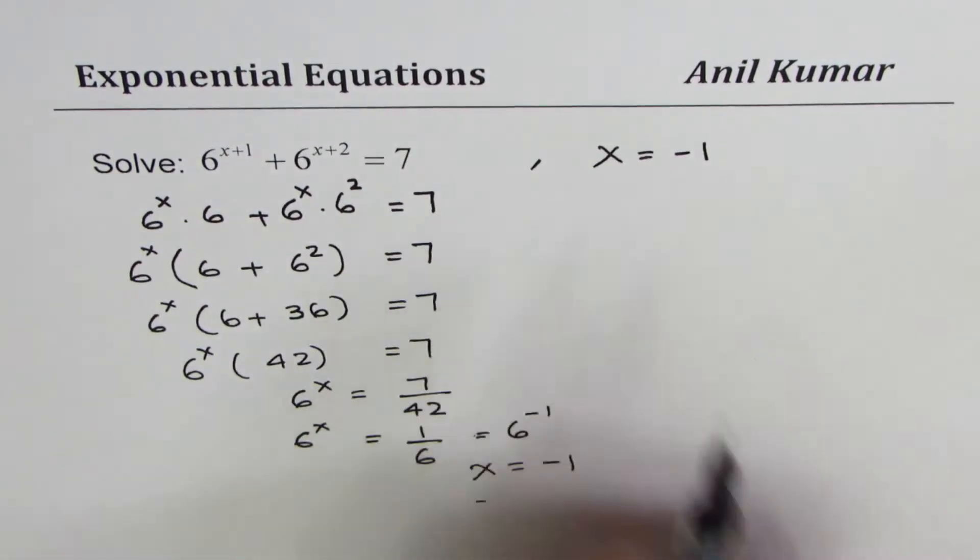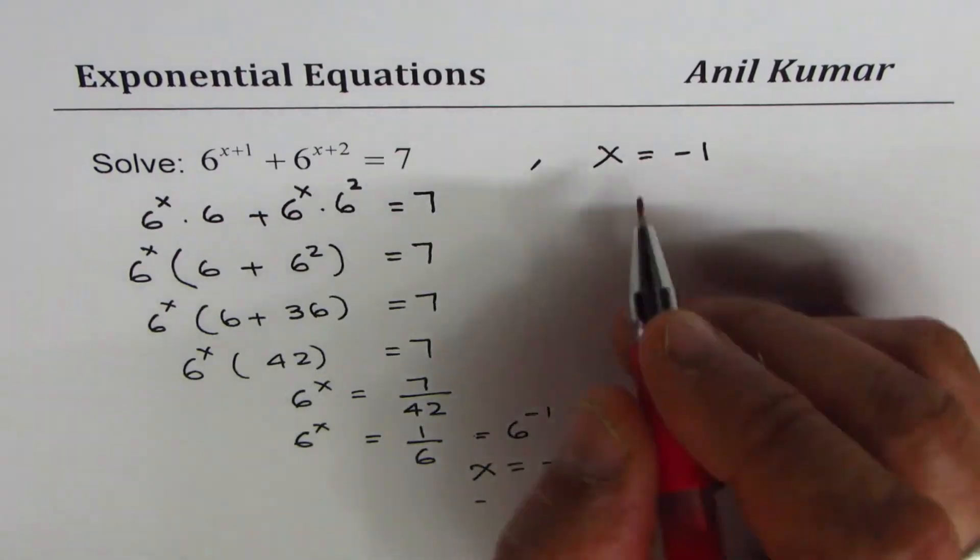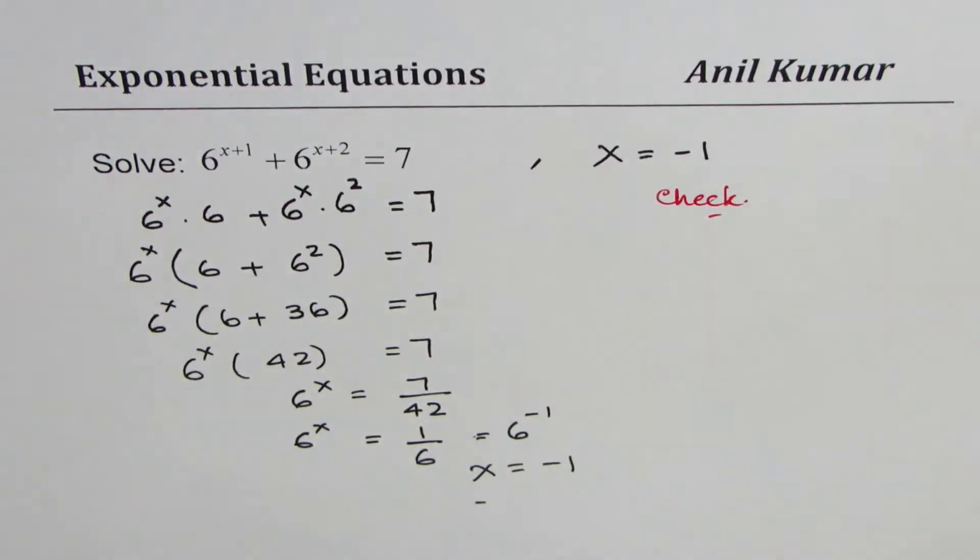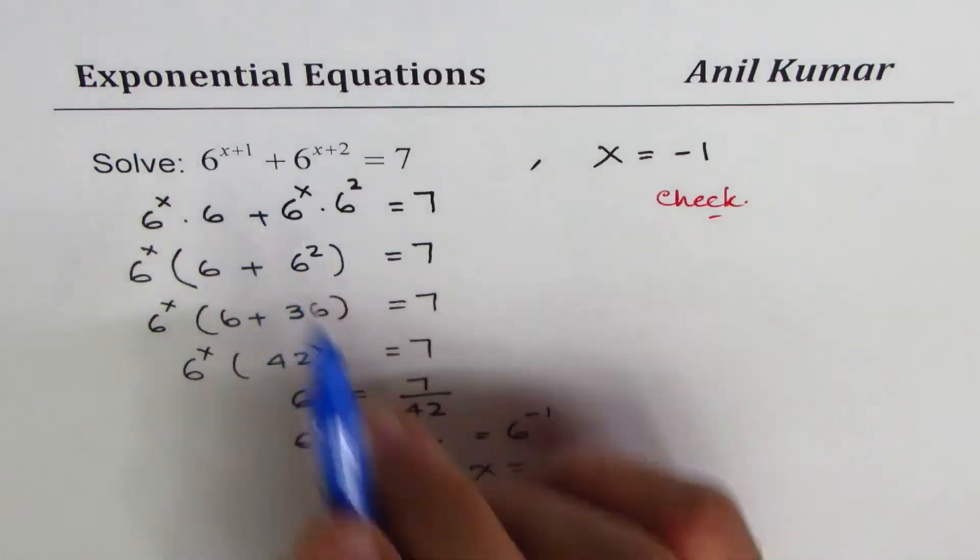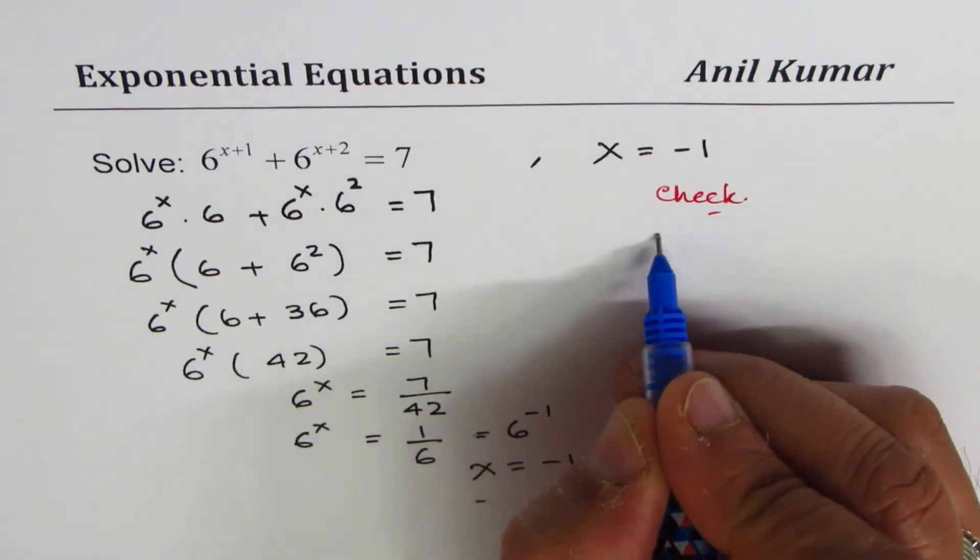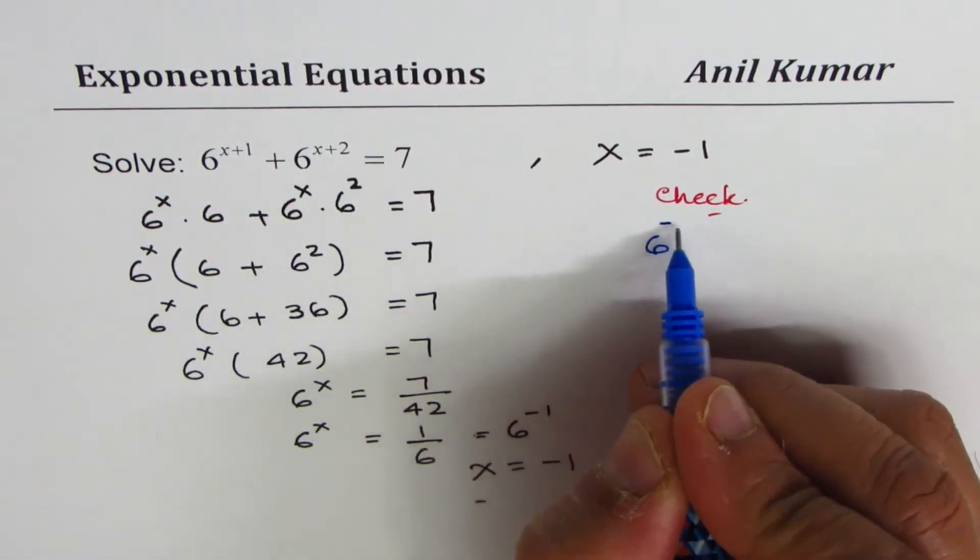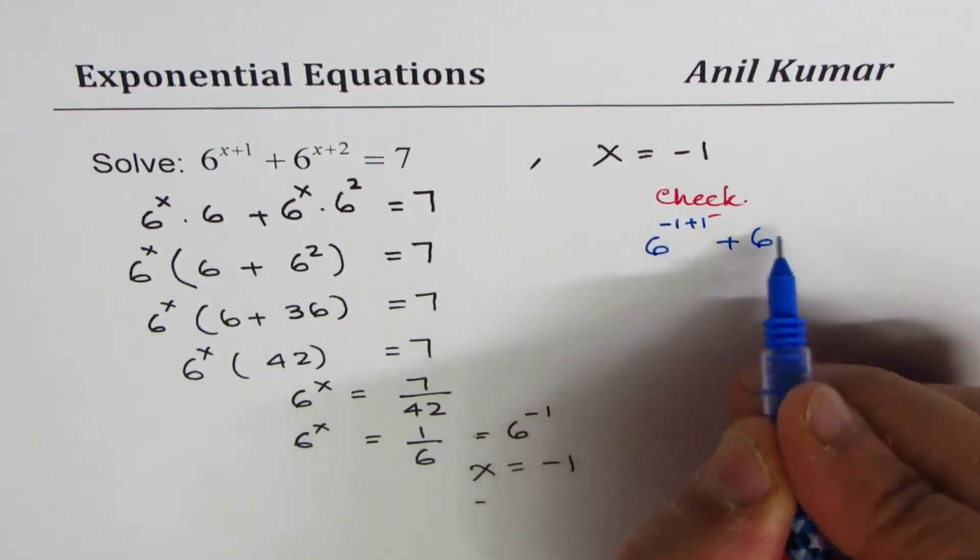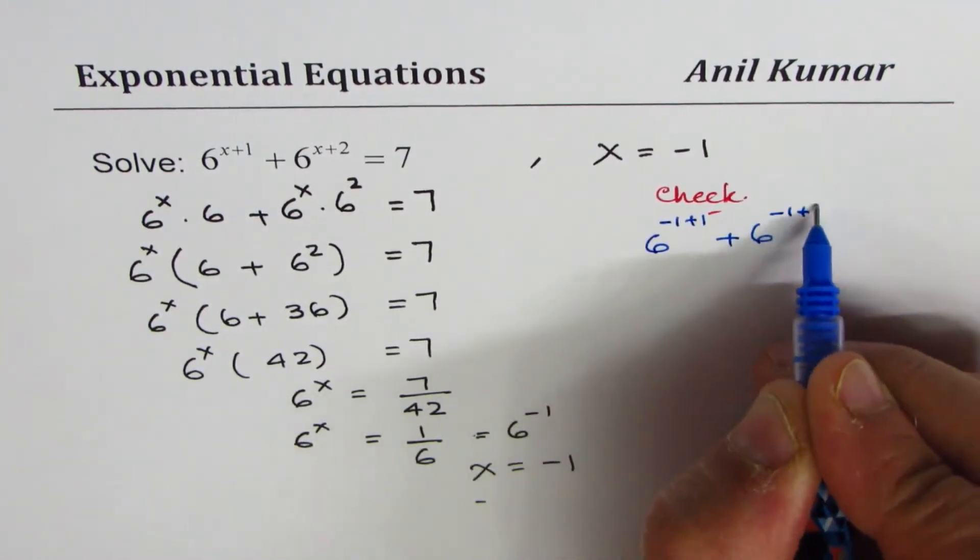Let us check the solution, which is always a good idea. If I replace x with -1, I get 6^(-1+1) + 6^(-1+2).